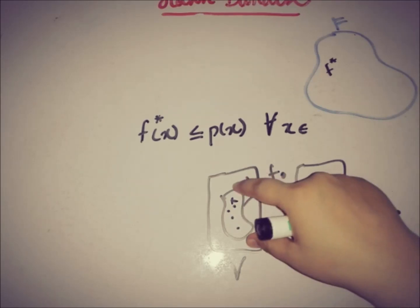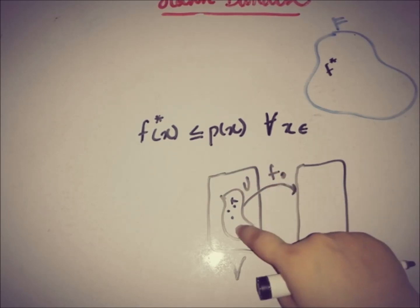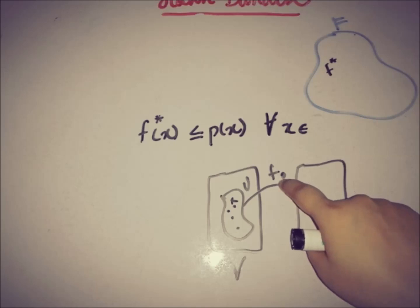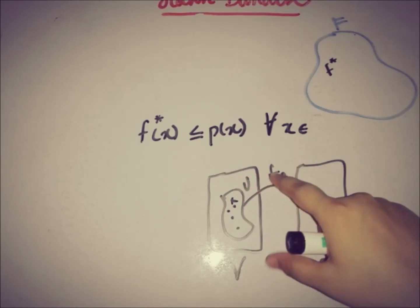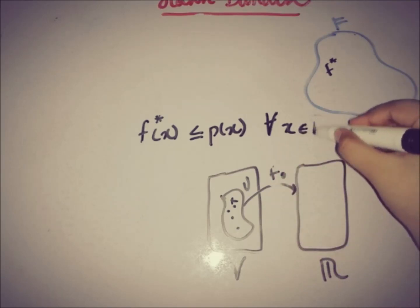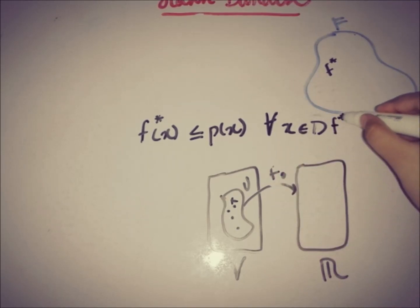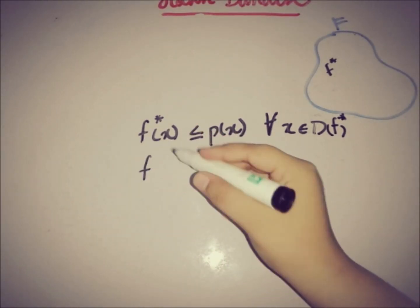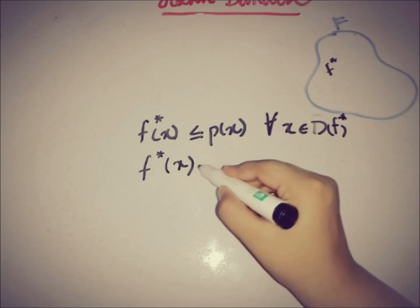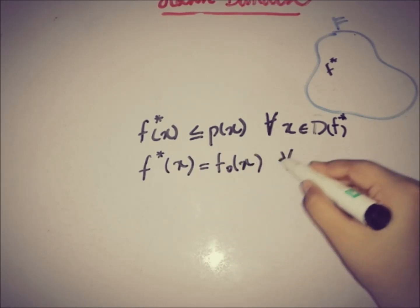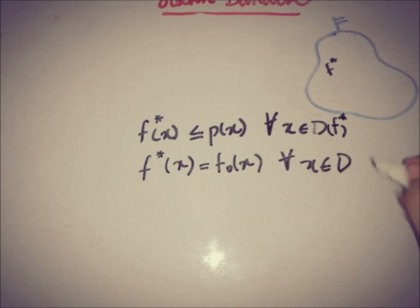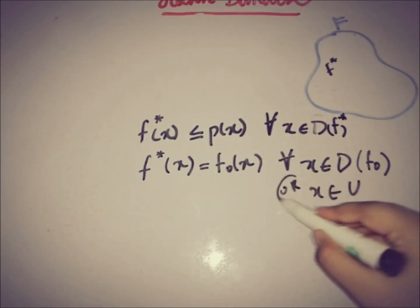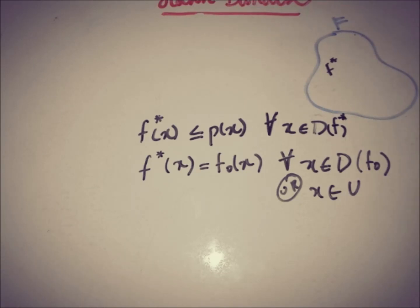The domain of f₀ is U. When we say f* is an extension of f₀, the elements taken from the domain of f* must satisfy f*(x) = f₀(x) when x is taken from the domain of f₀, i.e., for all x in U.